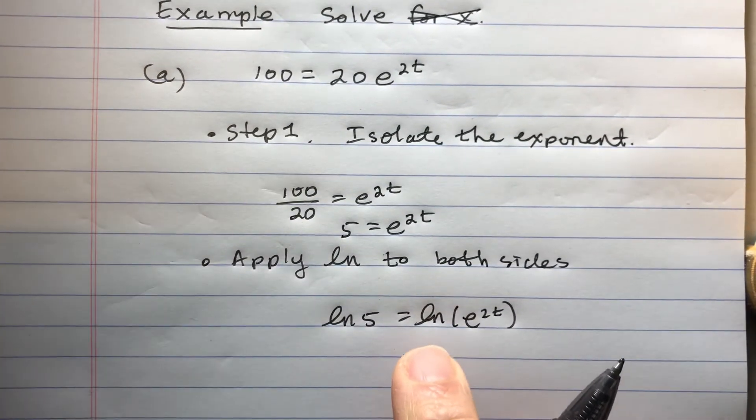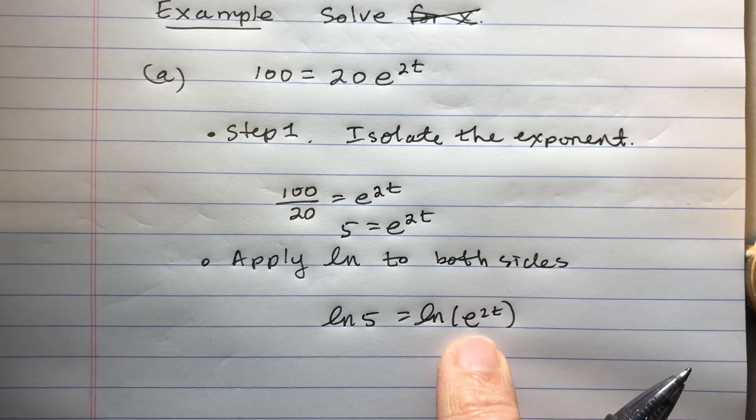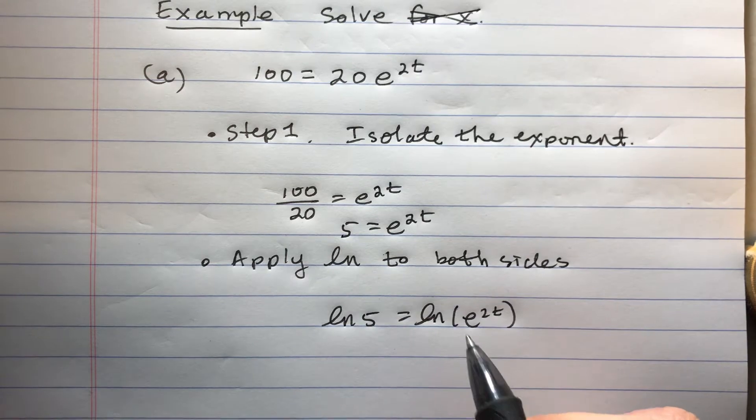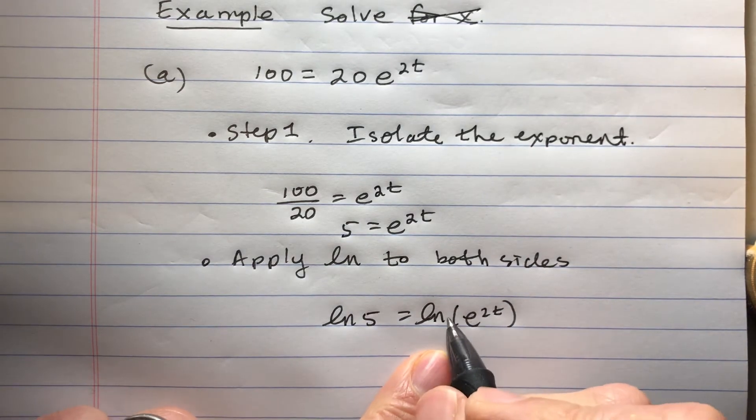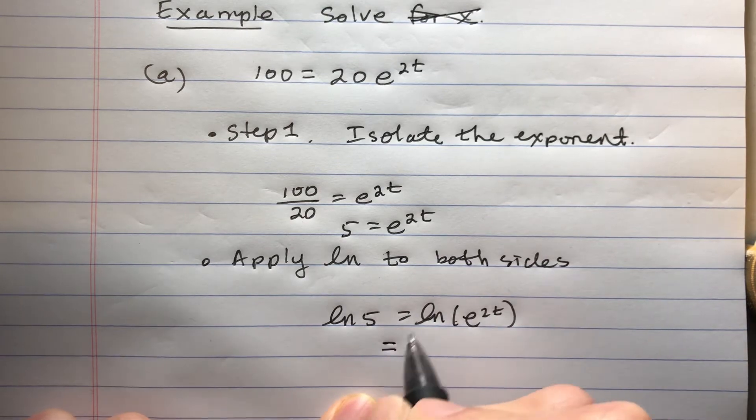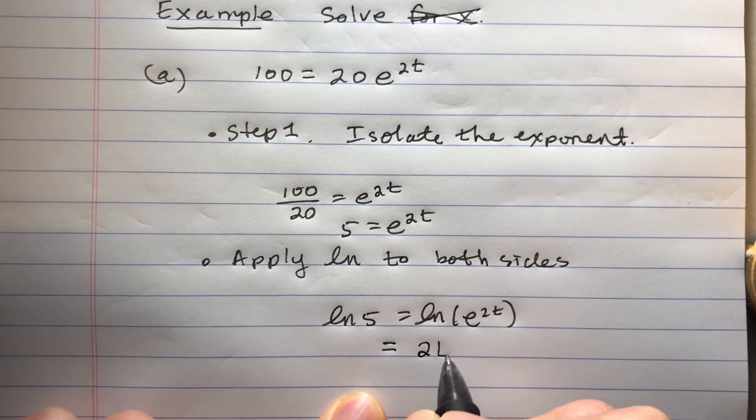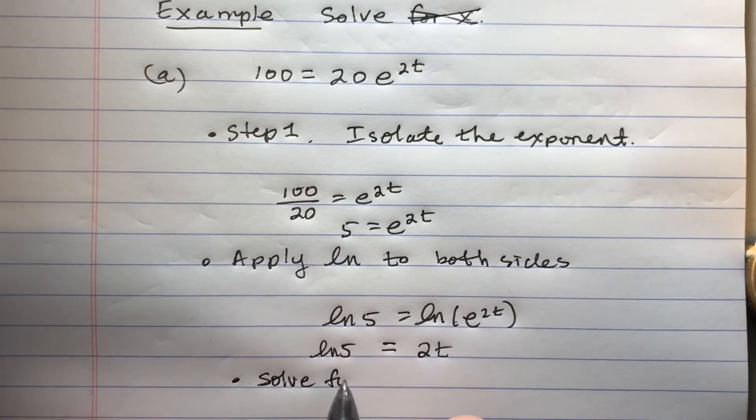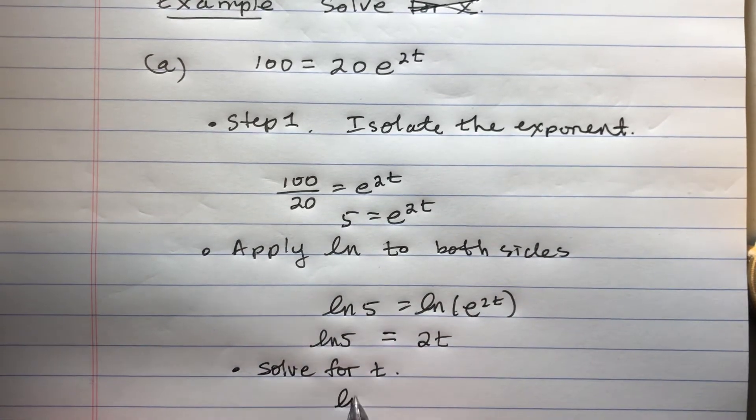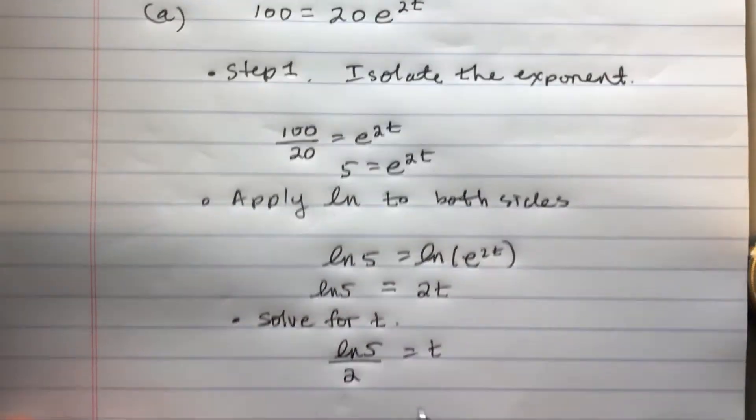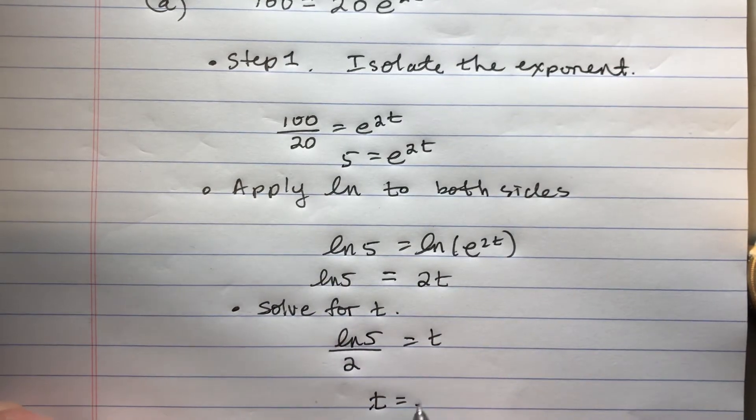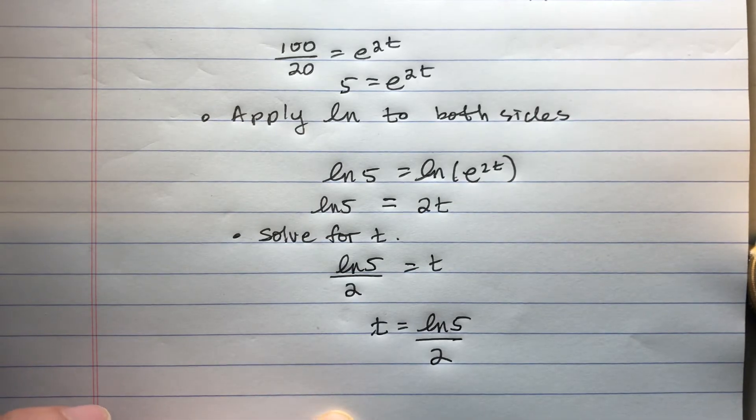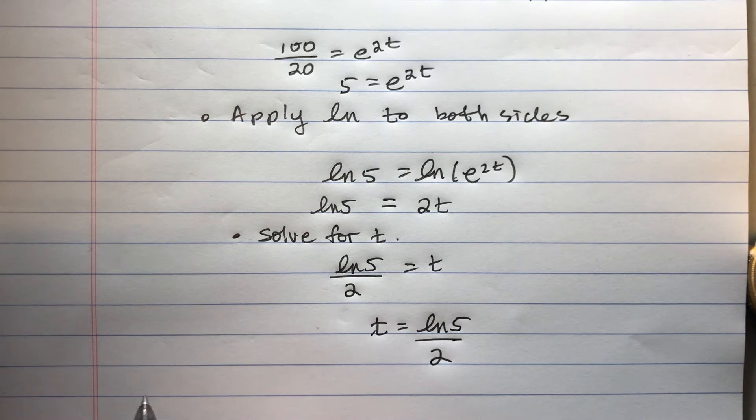And so I get ln 5 equals ln e to the 2t. Now, here is the advantage of using base e and using ln. They both cancel. The reason I had to isolate the exponent is because if this had a 20 in front, the ln and e wouldn't cancel out. So the ln and e are right next to each other, they cancel, and I get 2t equals ln 5. And then I'll just solve for t by dividing both sides by 2. You can just leave it like that.